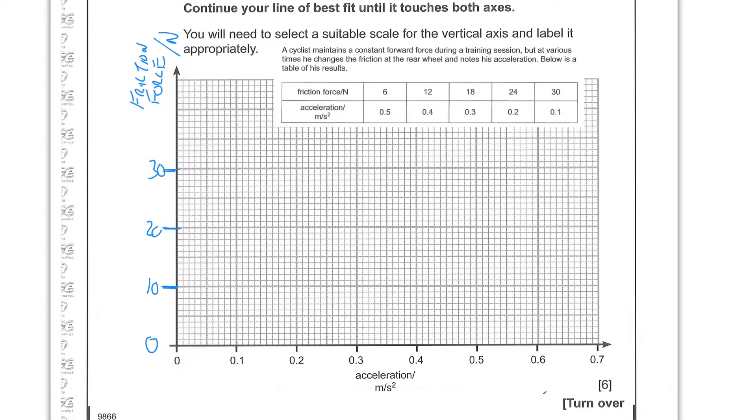And so now we need to plot these points. So when the friction force was 6, the acceleration was 0.5. So acceleration 0.5 is here and we're looking to do a 6 which would be there. 0.4 we had a 12, so 0.4 and we have a 12. And 0.3 we had an 18, so that's going to be here. 0.2 we had a 24, and that's going to be here. And 0.1 we had a 30, and that's going to be there.